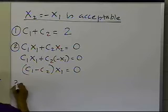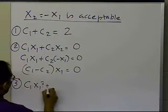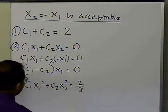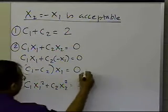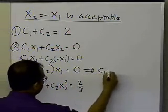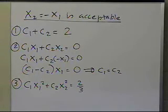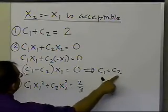Let's look at the third equation. The third equation is c1 x1 squared plus c2 x2 squared is equal to two-thirds. And from here, I can say that c1 is equal to c2 because x1 equal to 0 is not a choice, which we just found out. So c1 is equal to c2 is a choice.